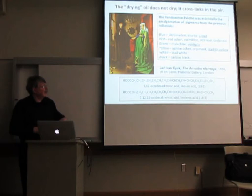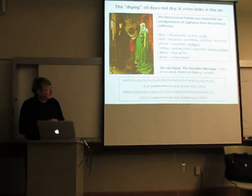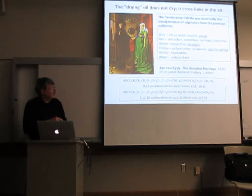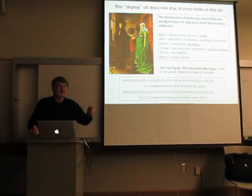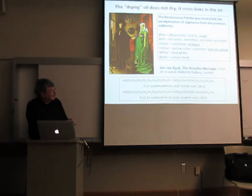A quick comment on Renaissance materials: oil on oak panel. The key thing about oil paints is that it's a so-called drying oil — it doesn't actually dry. It undergoes a chemical reaction, reacting with oxygen in the air. The double bonds in the molecular structure lead to cross-links, which bind everything together.